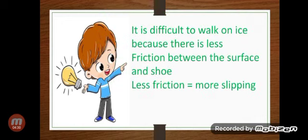So we can say that it is difficult to walk on ice because there is less friction between the surface and shoe. Less friction means more slipping.